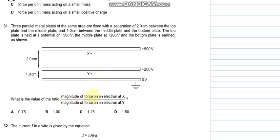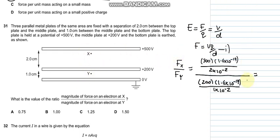Find the magnitude of the force on electrons at x and at y. The formula for force in an electric field is VQ over d: voltage, the potential difference, Q the charge of electron, and d the distance between the plates. After plugging in the values at x and y, we would get 3 by 4, so that is 0.75.